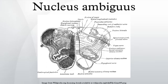This nucleus gives rise to the branchial efferent motor fibers of the vagus nerve terminating in the laryngeal and pharyngeal muscles and musculus uvulae, as well as to the efferent motor fibers of the glossopharyngeal nerve terminating in the stylopharyngeus muscle. The nucleus ambiguus controls the motor innervation of ipsilateral muscles of the soft palate, pharynx, larynx, and upper esophagus.